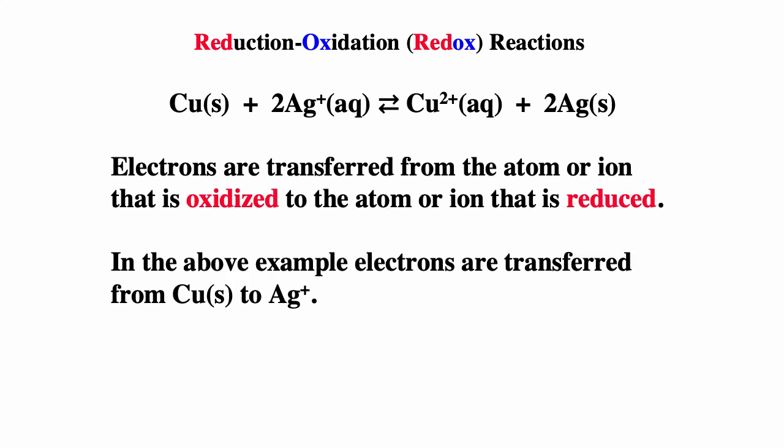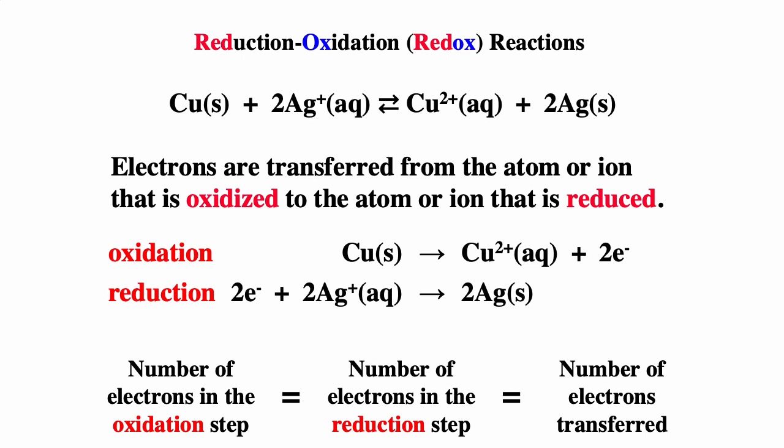For redox reactions, there is a transfer of electrons from one thing to another. In this example, electrons are transferred from the copper to the silver ions. We can describe this as an oxidation half-reaction and a reduction half-reaction. The two electrons lost by the copper are the same two electrons gained by the silver ions. The number of electrons in the oxidation step must equal the number in the reduction step, which equals the number of electrons being transferred — in this reaction, two electrons are transferred.